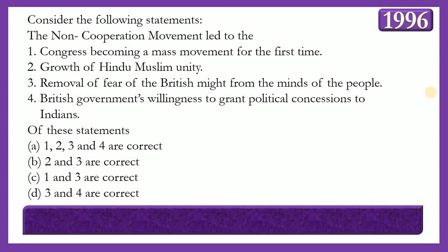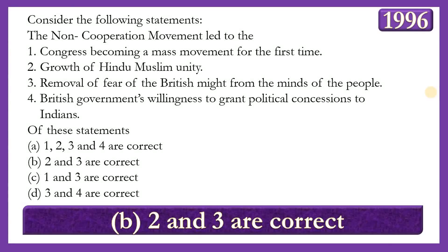Next question: The non-cooperation movement led to which of the following? (1) Congress becoming a mass movement for the first time; (2) Growth of Hindu-Muslim unity; (3) Removal of fear of the British from the minds of the people; (4) British government's willingness to grant political concessions to India. The answer is option B — statements 2 and 3 are correct — as the movement aimed to resist British rule through non-violent means, and Gandhi's ability to rally hundreds of thousands of citizens toward independence was first seen on a large scale.